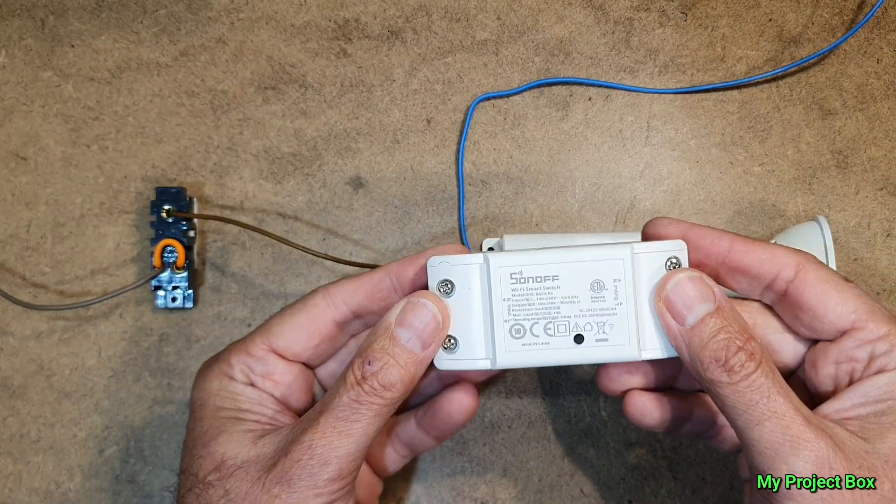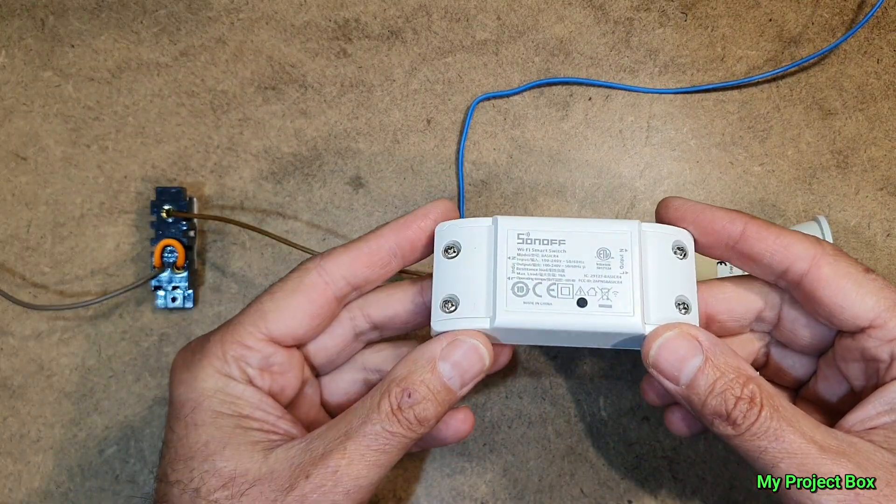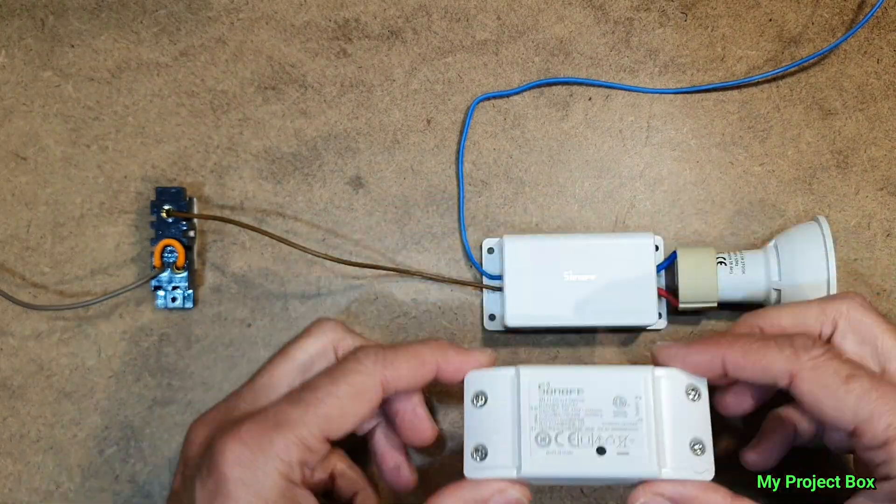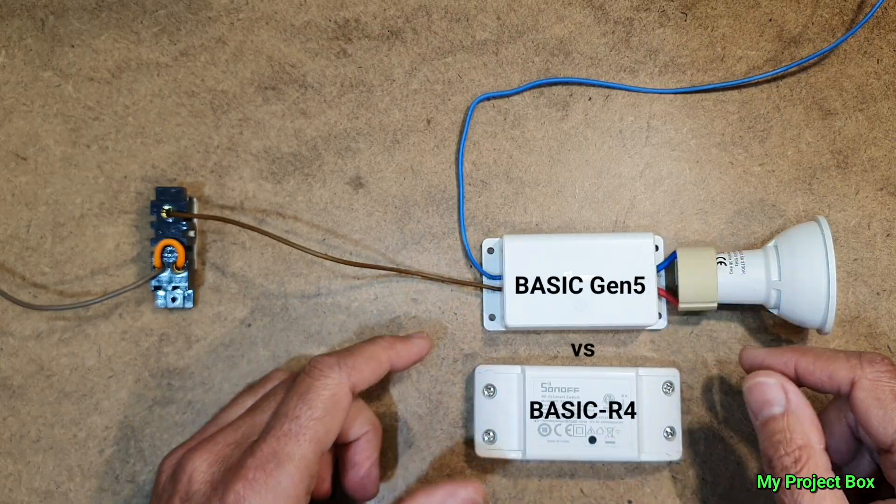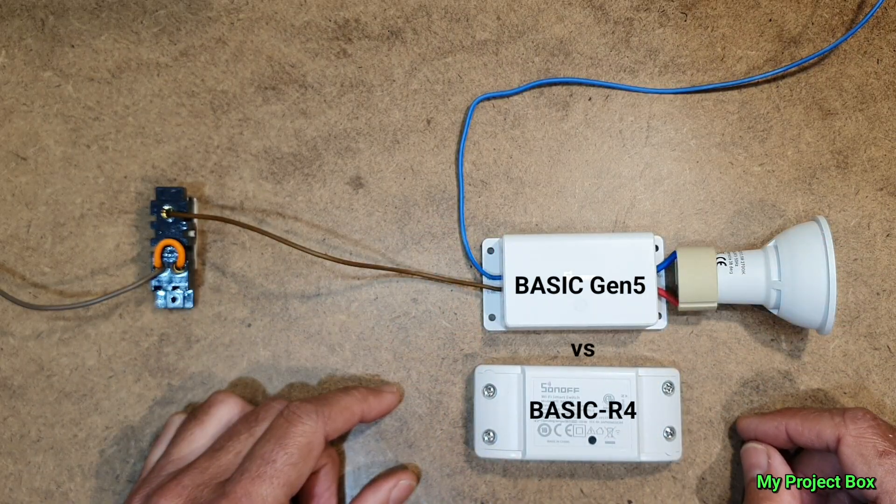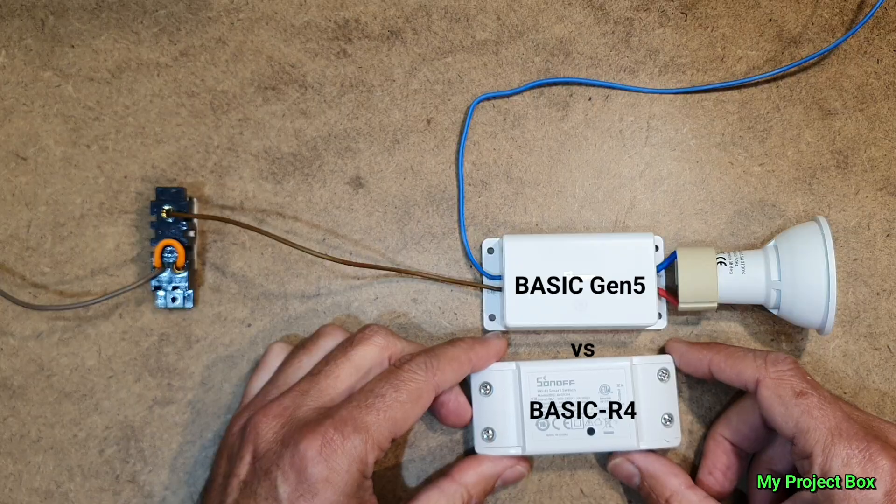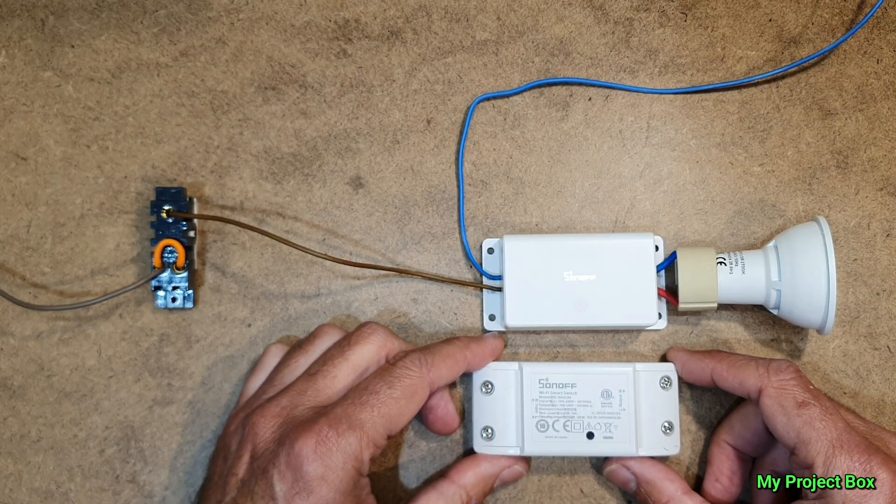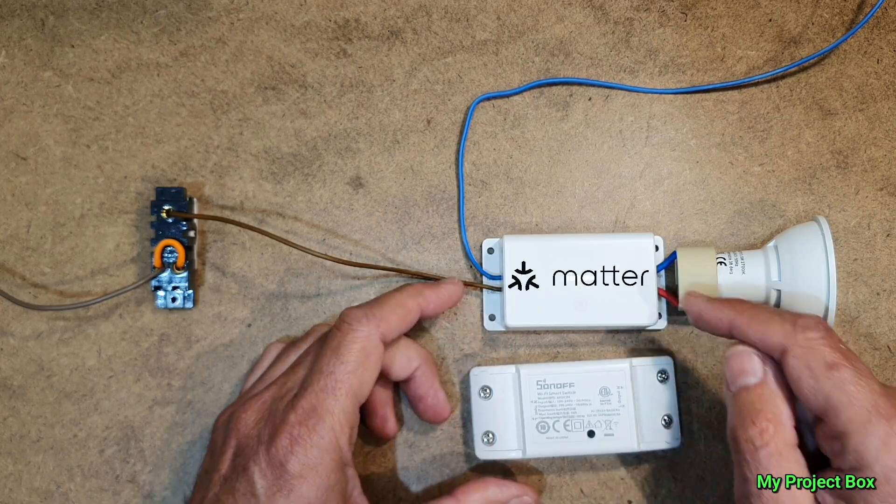In essence it's exactly the same as the Basic R4. It's slightly smaller and has screw holes so you can mount it, which is quite useful. But the main difference I really like is that it's got Matter inside.